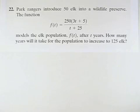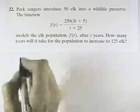Park Rangers introduced 50 elk into a wildlife preserve. The function f(t) = 250(3t + 5)/(t + 25) models the elk population f(t) after t years. How many years will it take for the population to increase to 125 elk?